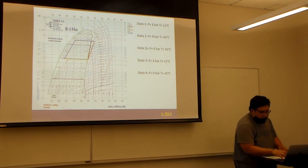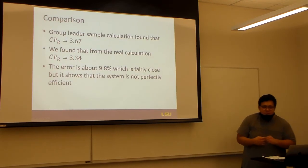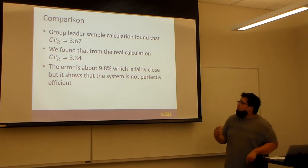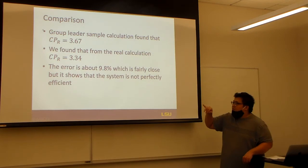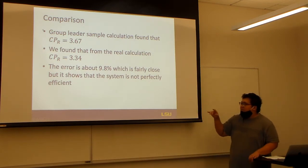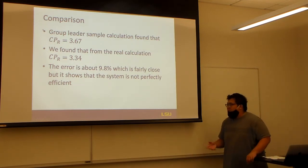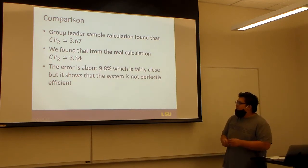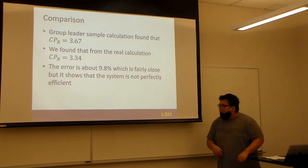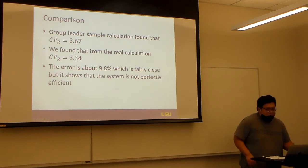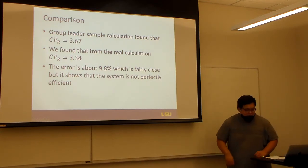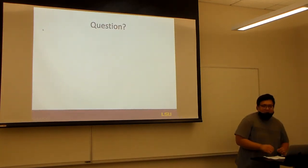Based on the results from the group leader, he found the refrigeration coefficient of performance to be 3.67, and we found it in this experiment to be 3.34. That's basically a 10% error, which shows that the system was not perfectly efficient. And that's it — any questions?